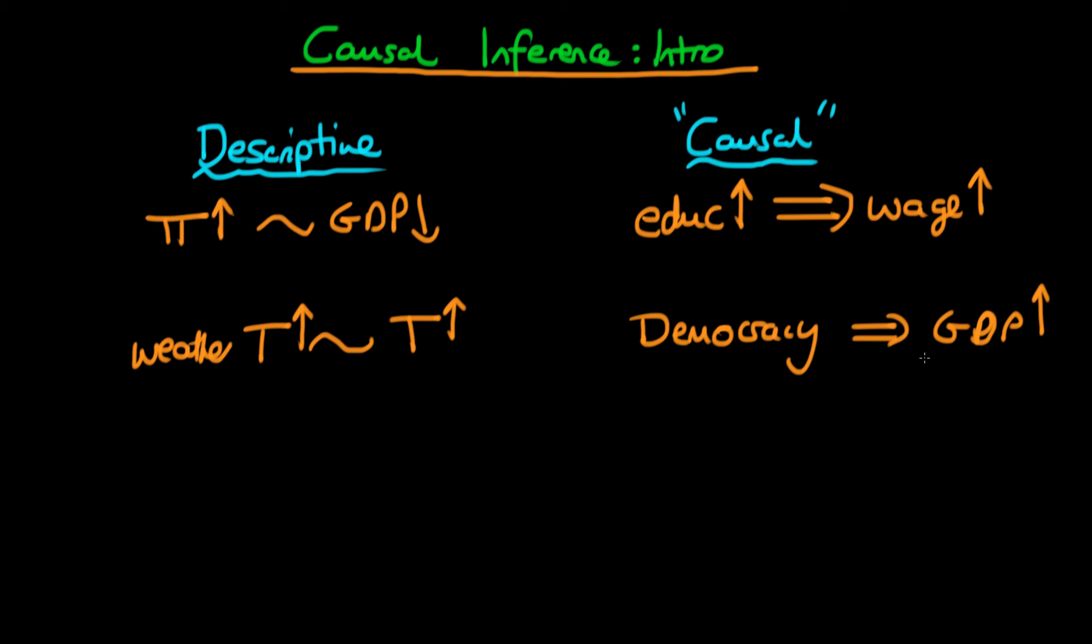Essentially, the causal mechanism provides us with a kind of model of the world, whereas descriptive is purely statistical. A model is much more useful than a statistical description of a situation because it allows us to envision what would happen in different situations a lot better than a statistical model would.